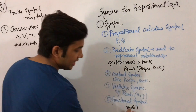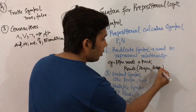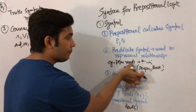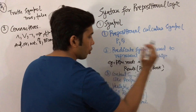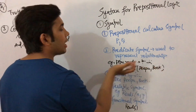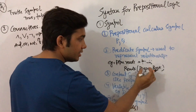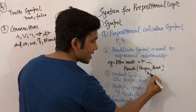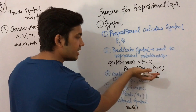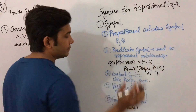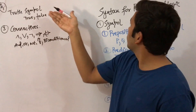The fifth type of symbol is the functional symbol. For example, reads(Deepu, book) is one complete function, where 'reads' is the function name and there are two elements inside: element x1 and element y1. So it is one complete function with two elements.